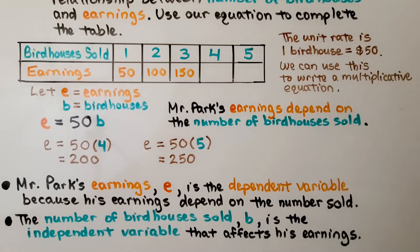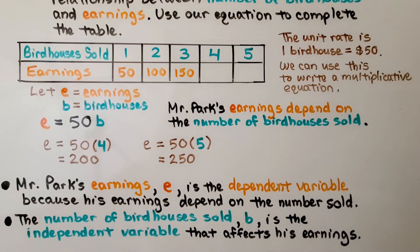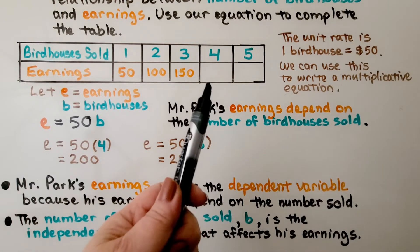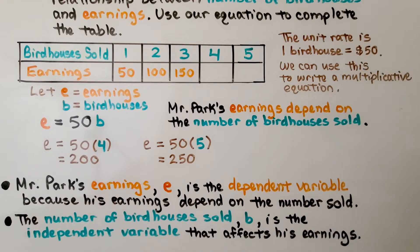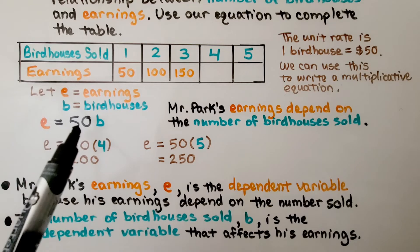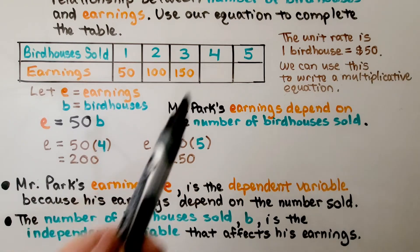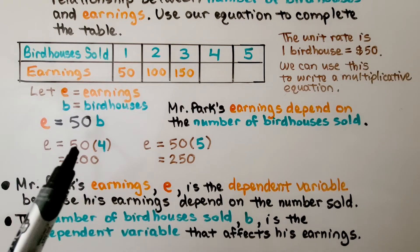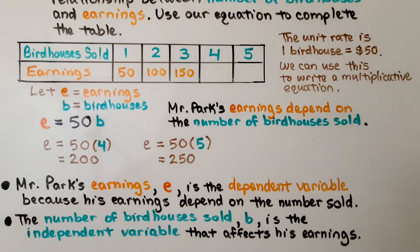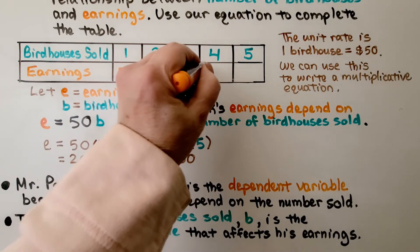The table is filled out for one, two, or three birdhouses. We need to find the value of the earnings for four birdhouses sold. We use our equation. The earnings is equal to 50 times the number of birdhouses. We substitute 4 for B and 50 times 4 is 200. We should put 200 here.